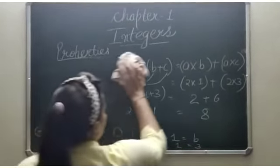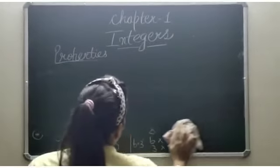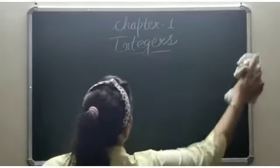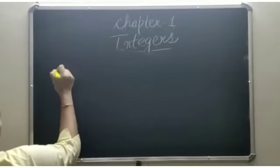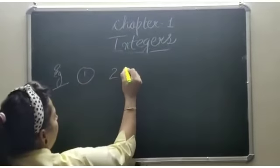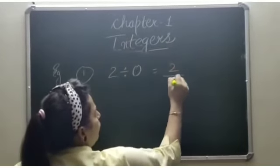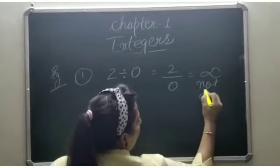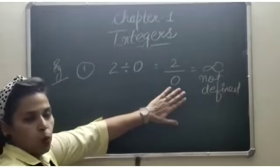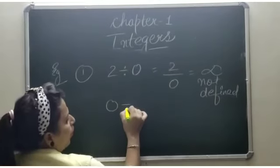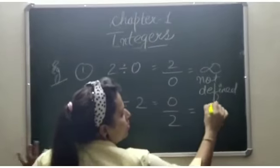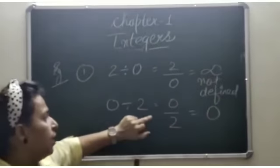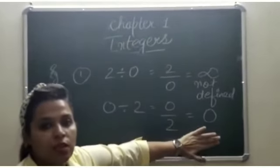One more thing: in case of division, if anything is divided by 0 — for example, 2 divided by 0 — your answer will be not defined. It is not defined because 0 is in the denominator. But if 0 is divided by any number — for example 0 divided by 2 — it would be 0. So if 0 is in the denominator, it will be not defined. But if 0 is in the numerator, then it will be 0.